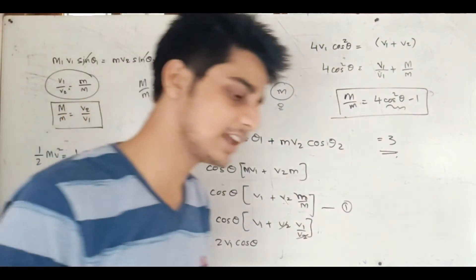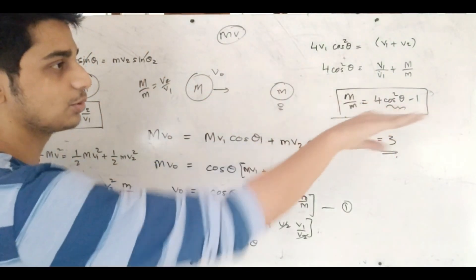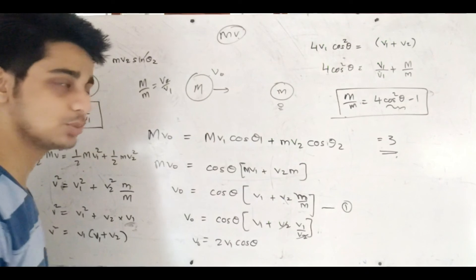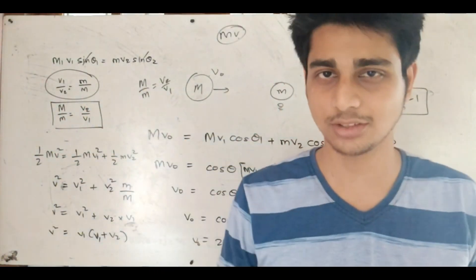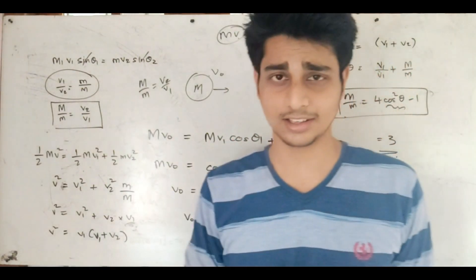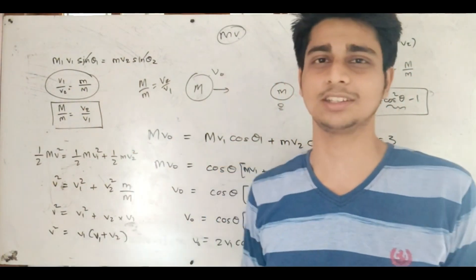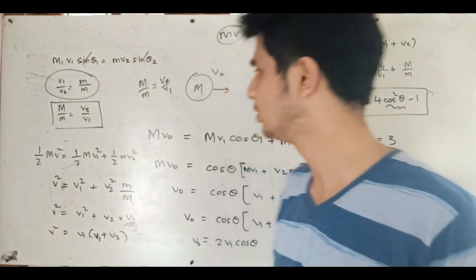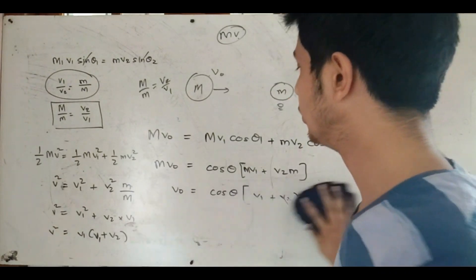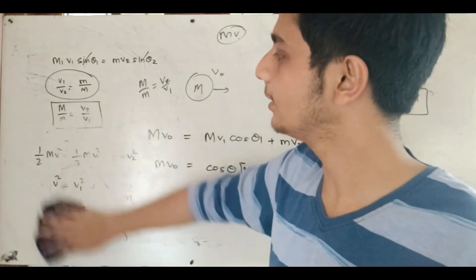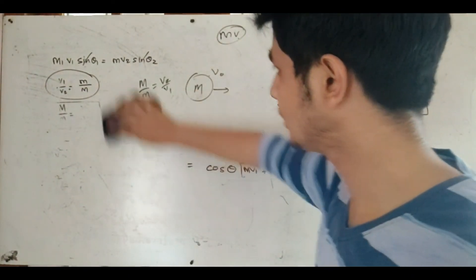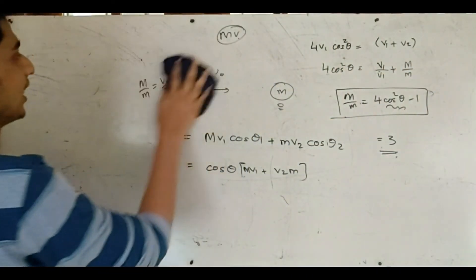In this video we used the law of conservation of momentum — horizontally and vertically — energy conservation, and substitution. All the ingredients of a JEE Main problem are here. This is the same type of problem as JEE Main and KEAM. If you have any questions about this video, please take a look. We'll see you guys in the next video. Bye.